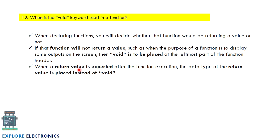When is the void keyword used in a function? When declaring functions, you specify whether the function returns a value or not. If the function is not returning a value — such as when its purpose is just to display output on the screen — void is used. void is not used when the function is expected to return a value; in that case, we write the data type of the return value instead.